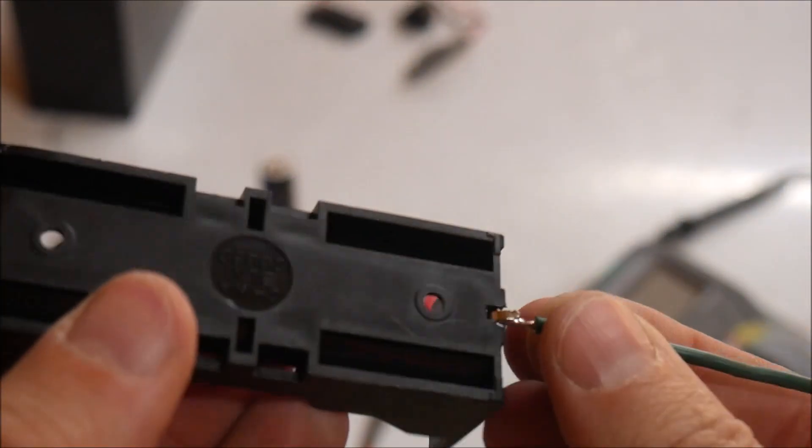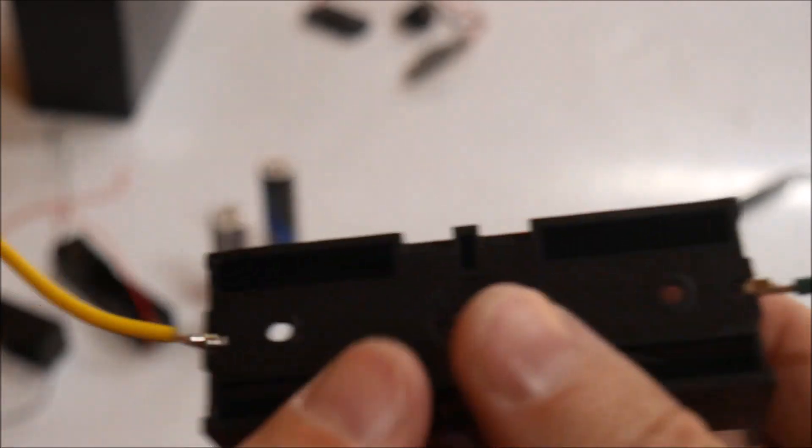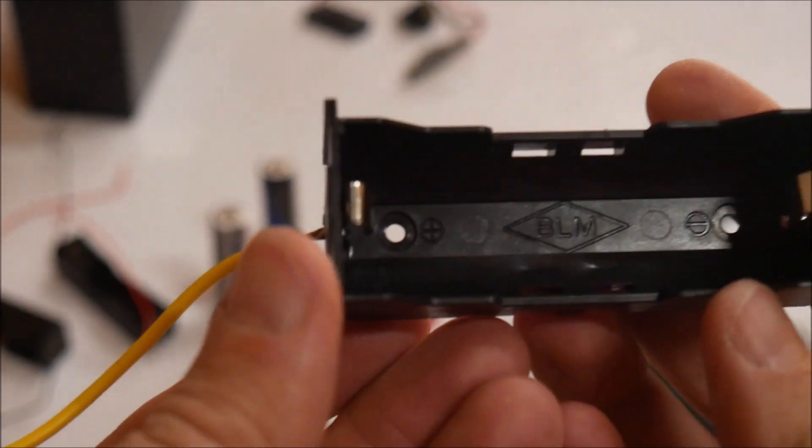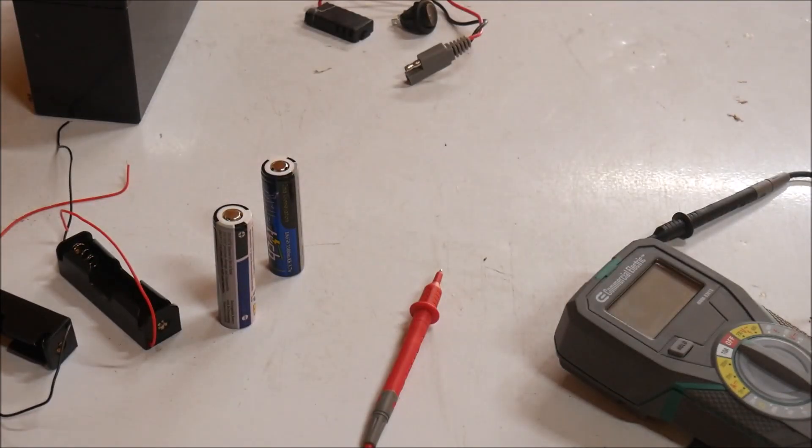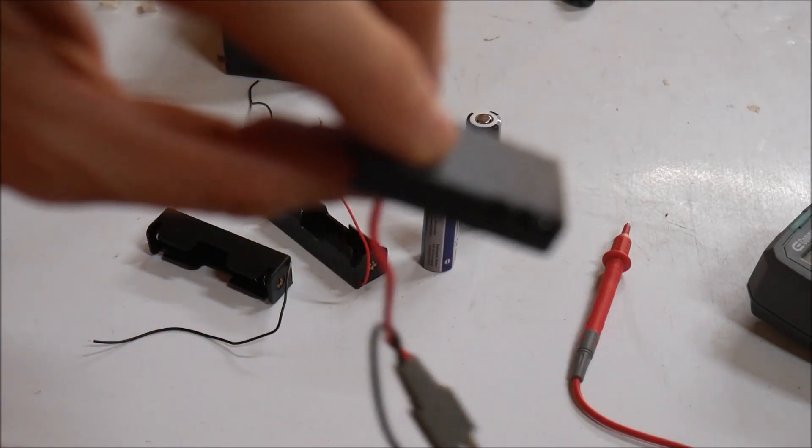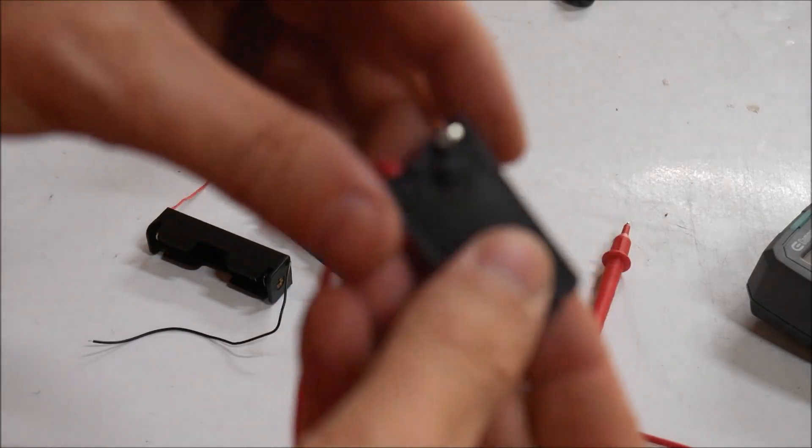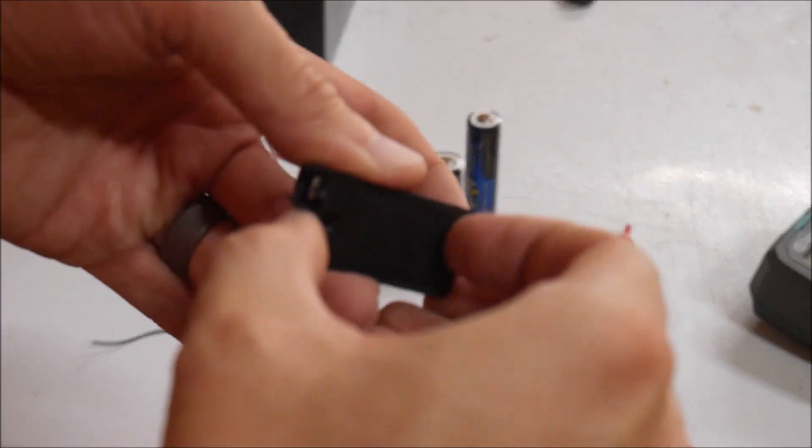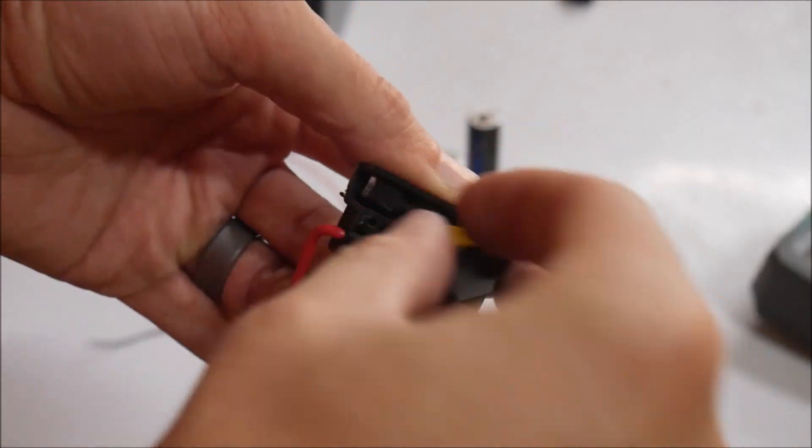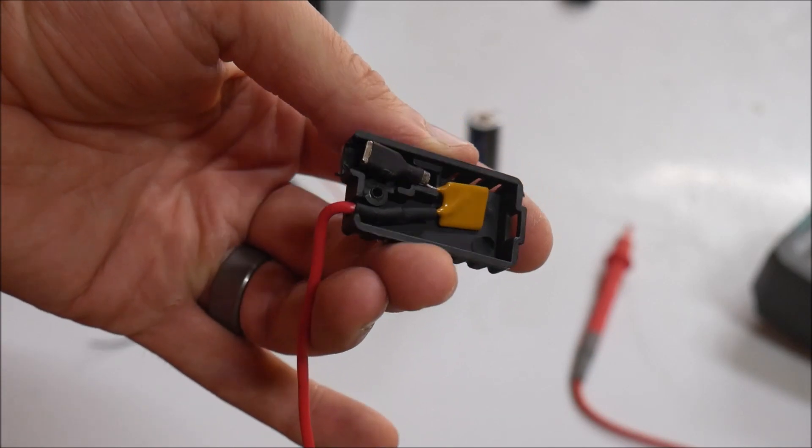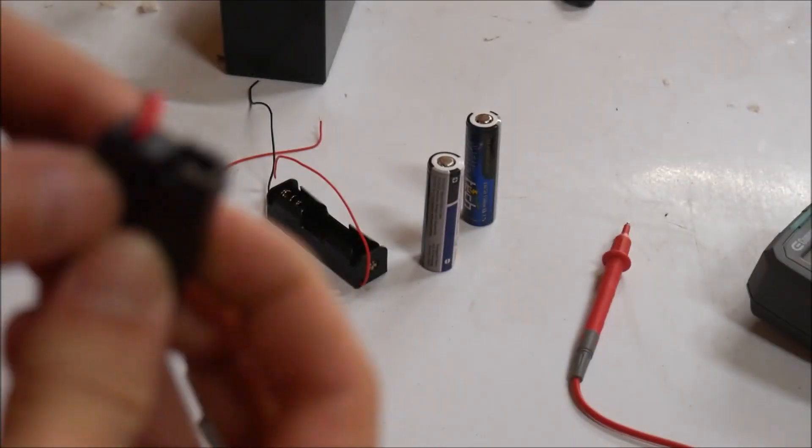Anyway, I soldered on some 16 gauge wire to the posts of the battery holders, and then crimped on some connectors that will connect to the existing connectors that normally attach to the lead acid battery. I left this fuse, or diode, or whatever it was that was providing protection for the old battery, intact. We don't need it, but if I want to reinstall the old battery someday, it'll still be there.